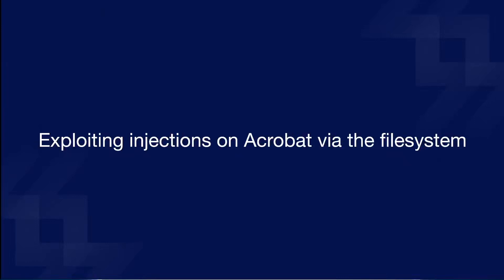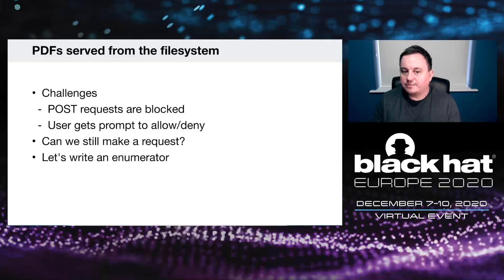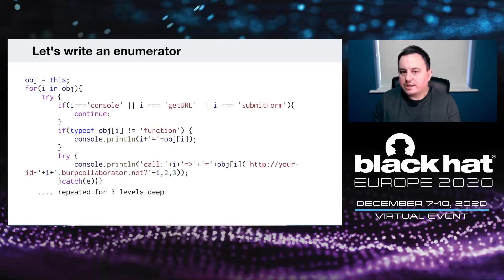We can track when a PDF is opened or closed automatically from an annotation, but what about loading a PDF from the file system? There are challenges — POST requests are blocked and the user gets a prompt to allow or deny. I wrote an enumerator to loop through all objects, call every single function, pass a Collaborator URL as the argument, skip functions that required a prompt, and wait to see what results came back.